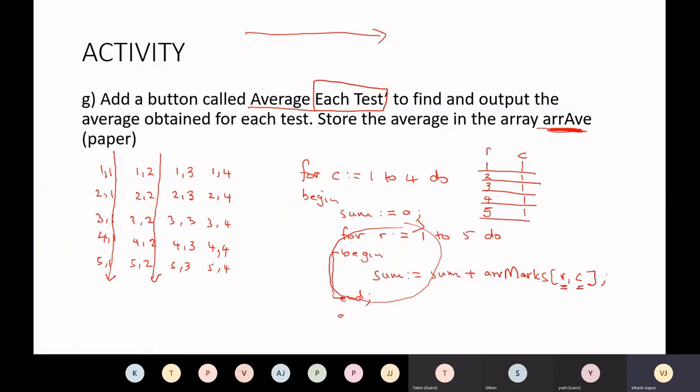And then when this R loop finishes, let's work out the average. ARRAVE C equals sum divided by the sum divided by five. Because I summed up five students. So you'll divide that by five and end. Remember the question does not want you to output it. All it wanted you to do is to take it and store it into your array app.